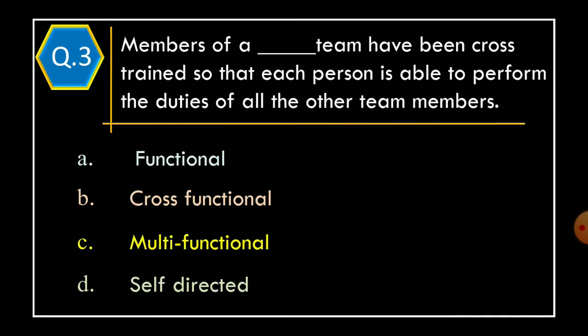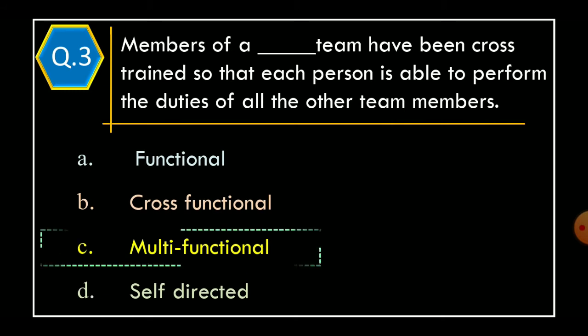Question 3. Members of a blank team have been cross-trained so that each person is able to perform the duties of all the other team members. Option A: Functional. Option B: Cross-functional. Option C: Multifunctional. Option D: Self-directed. The correct option is Option C: Multifunctional.